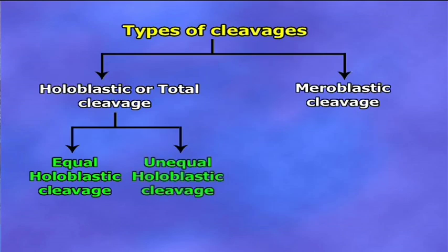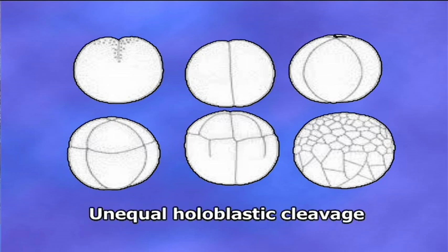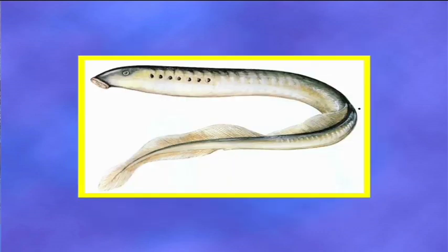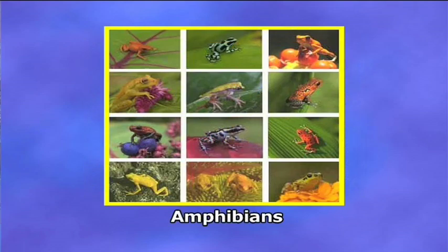Number two, unequal holoblastic cleavage: if the daughter blastomeres are unequal in size but the egg is completely divided, it is known as unequal holoblastic cleavage. It occurs in mesolacetal and telolacetal eggs of cyclostomes, fishes, and amphibians.